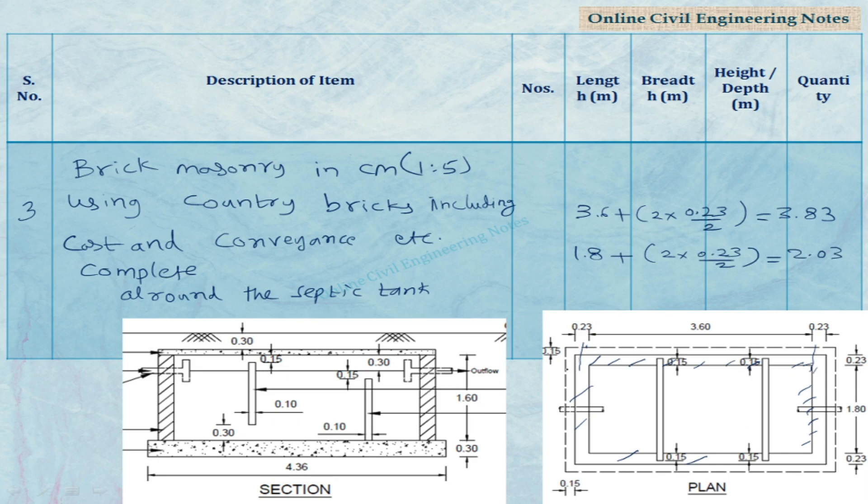Calculate the all around length of the brick wall. Overall length of the brick wall L is equal to 2 into 3.83 which is the center to center length of the brick wall in the longer direction. So on two sides we multiply it with 2 plus in the width direction 2 into 2.03. Overall length is equal to 11.72 meters.